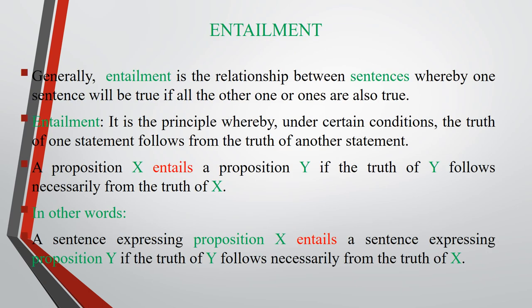Entailment is the fourth type of sense relations of similarity. Generally, entailment is the relationship between sentences whereby one sentence will be true if all other ones are also true. Entailment is the principle that under certain conditions, the truth of one statement follows from the truth of another. In other words, a proposition X entails a proposition Y if the truth of Y follows necessarily from the truth of X.